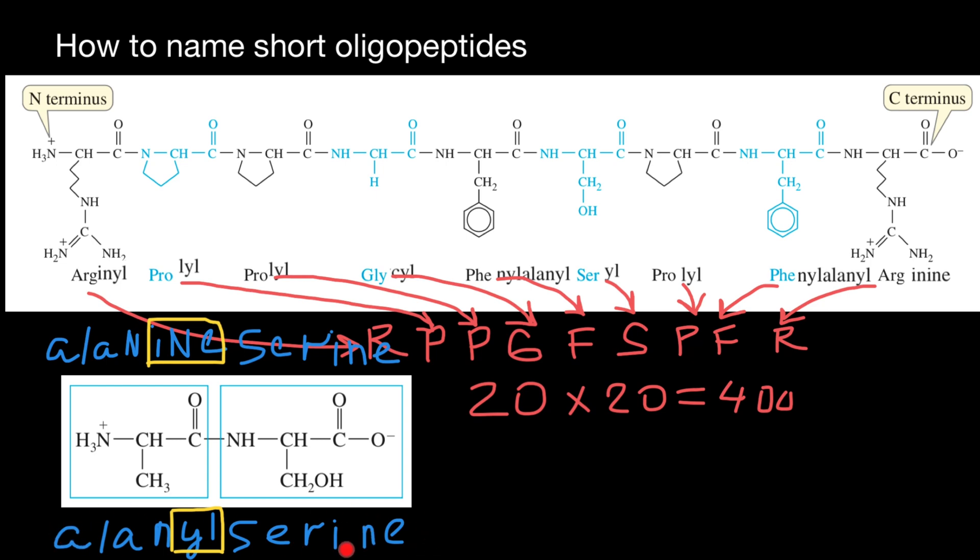I hope now you would be able to understand that suffix would change in all amino acids, except the last one, and you would be able easily to read names of the dipeptides, tripeptides, tetrapeptides, and so on. And this is all for today. Subscribe and see you in the next video. Goodbye.